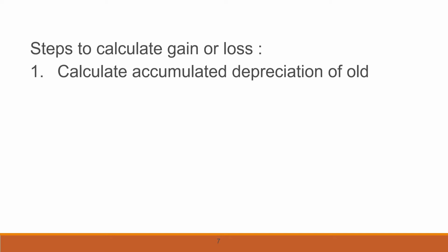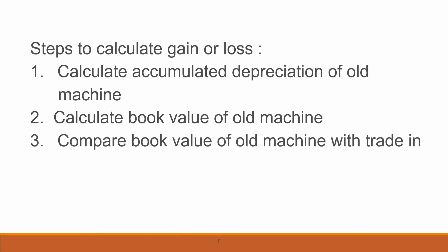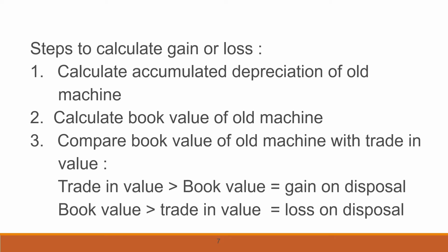We must calculate gain or loss. We can prepare it using a calculation or journal entry. The steps are: first, calculate accumulated depreciation of the old machine; second, calculate the book value of the old machine; third, compare the book value with the trade-in value. If the trade-in value is bigger than book value, we get a gain on disposal; if book value is bigger than trade-in value, we get a loss on disposal.